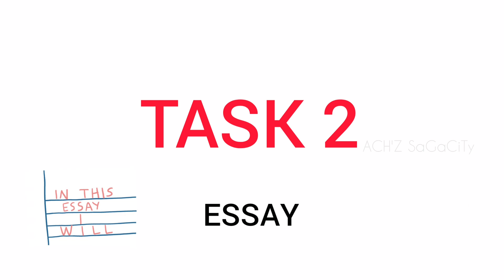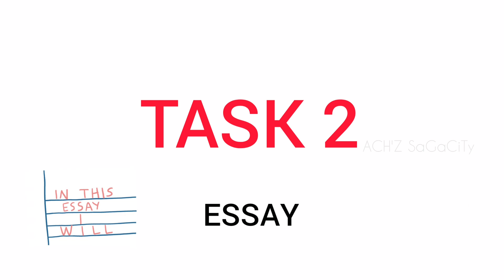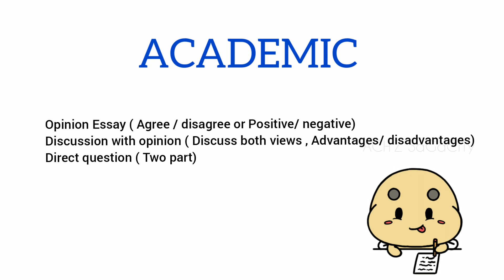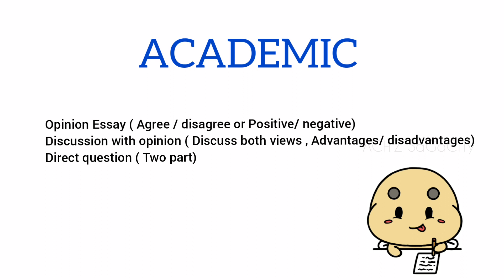Now we will see regarding the academic and general module Task 2 — that means essay writing. For the academic module, you can expect these three types of essay categories. First, opinion type essay — they will ask you in the form of agree or disagree, or is it a positive or negative development? Second, discussion with opinion type essay — that means discuss both views and state your opinion, or advantage/disadvantage and state your opinion. Third category is direct question — they will give two part questions, meaning in the question itself you will get two questions. You should be thorough with all three categories.